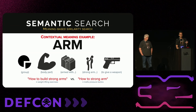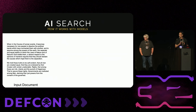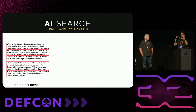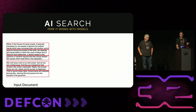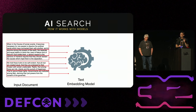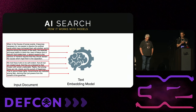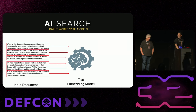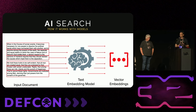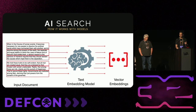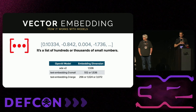In practice, vector search works by starting with an input document, which gets chunked up into pieces — sometimes by sentence, sometimes sets of around 30 words, often overlapping. Each piece gets run through something very similar to an LLM called a text embedding model. Unlike an LLM, a text embedding model produces something called a vector embedding — basically just a long list of very small numbers, hundreds or thousands in length.